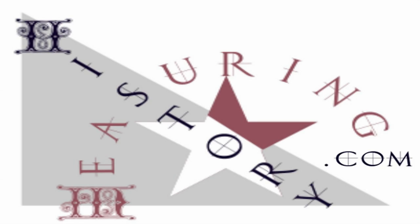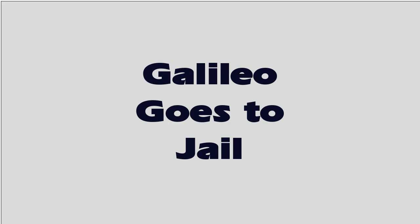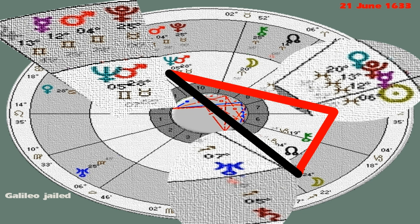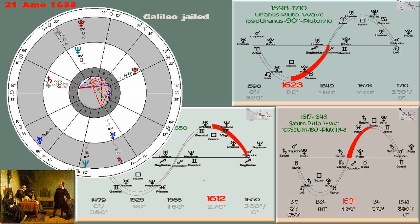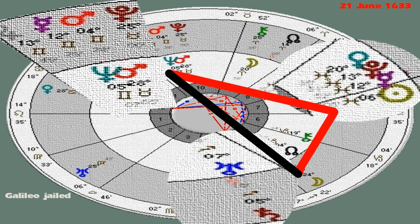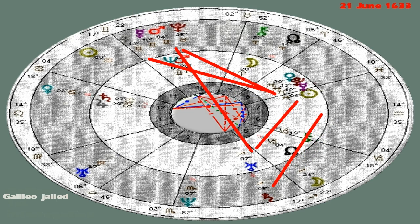measuringhistory.com presents 'Galileo Goes to Jail.' I want to start with the details of the chart in question. This is the day that Galileo broke down and admitted that he committed heresy — that Ptolemy was right, that he was wrong, and that Copernicus was wrong. Everything happened between April and June of 1633 as far as the trial is concerned.